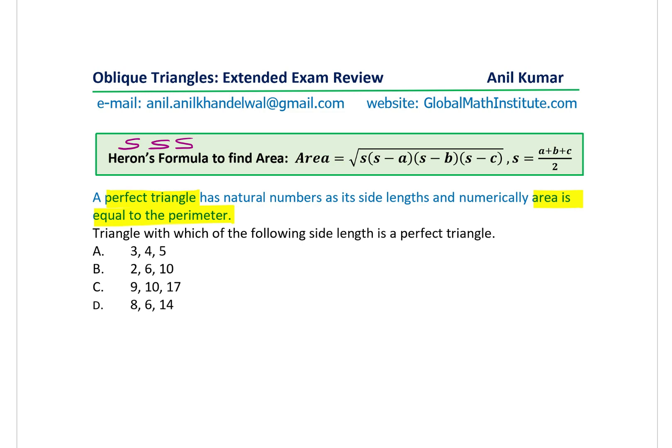Now, the question for you is, as a multiple choice question, which is triangle with which of the following side length is a perfect triangle? We are given four triangles in this case. You need to find area of each, compare with their perimeters, and then figure out which one is a perfect triangle. You can now pause the video, answer the question, and then look into my suggestions.